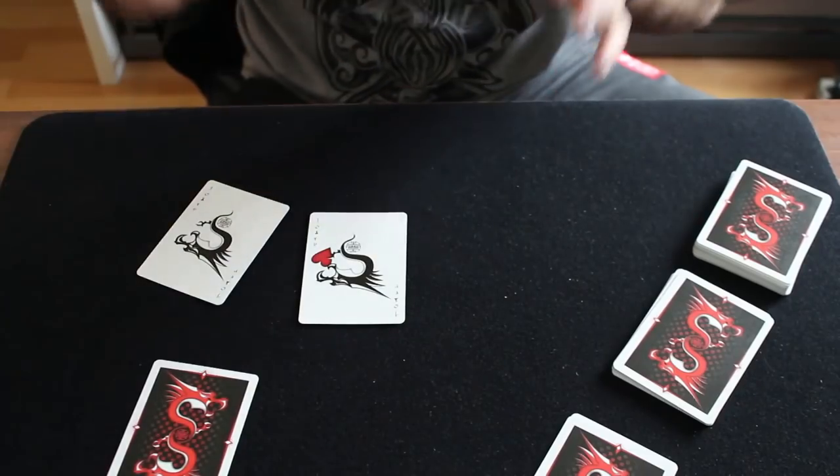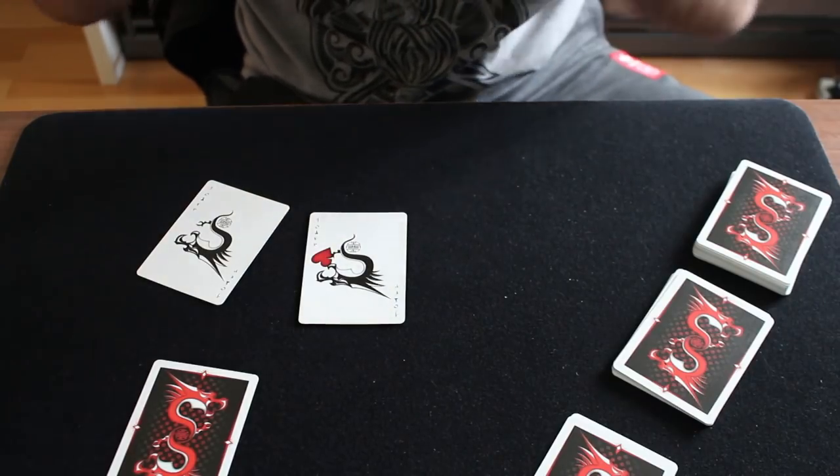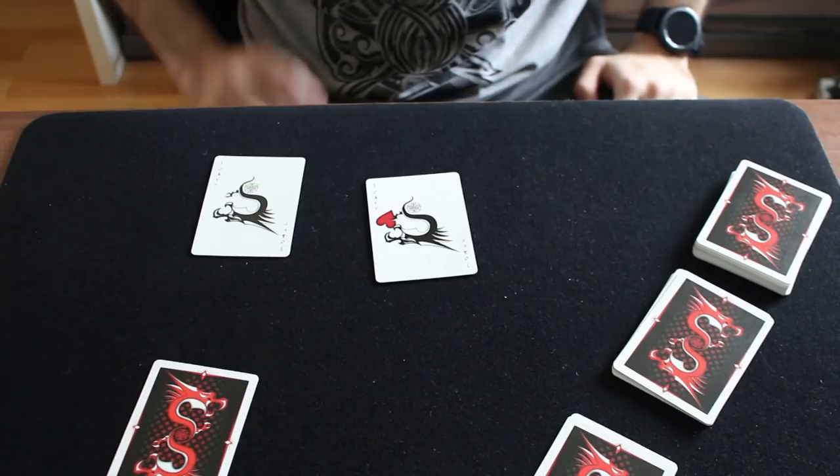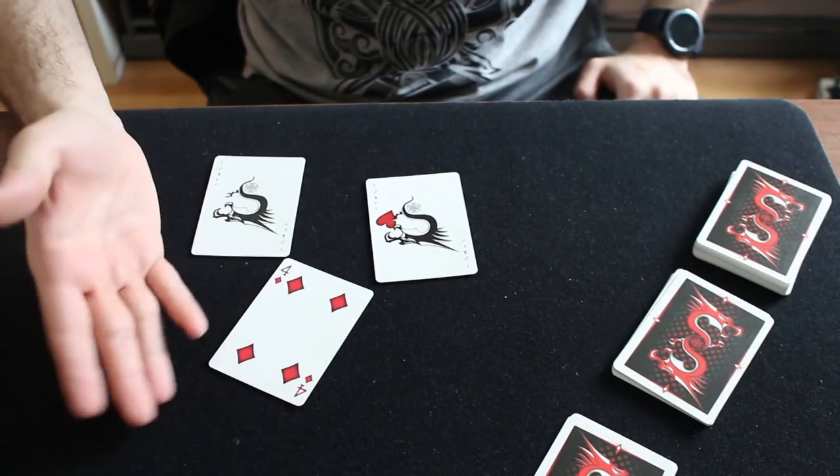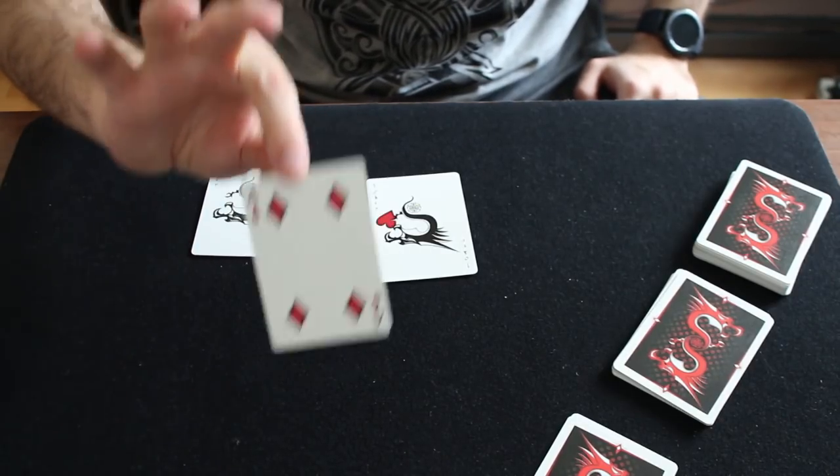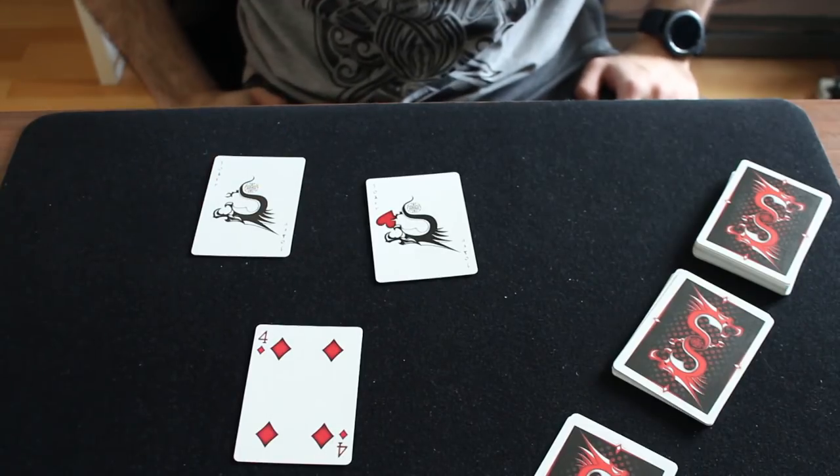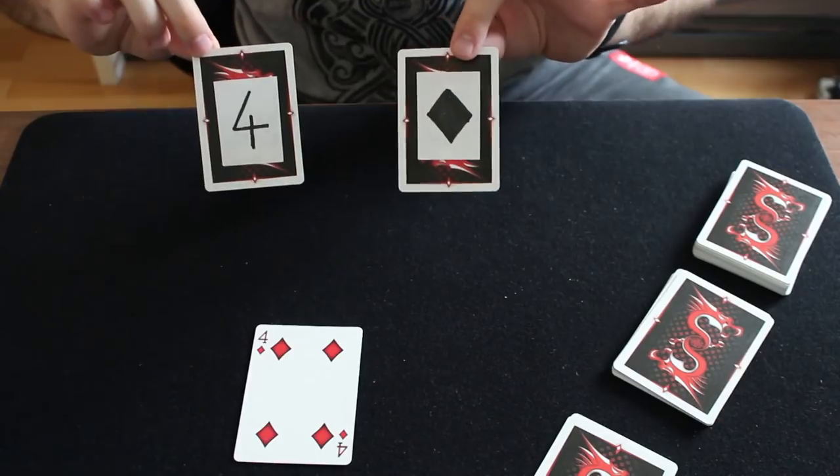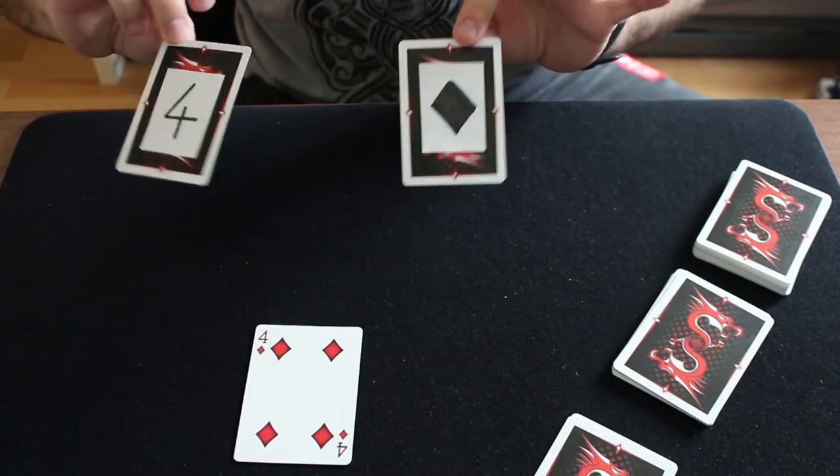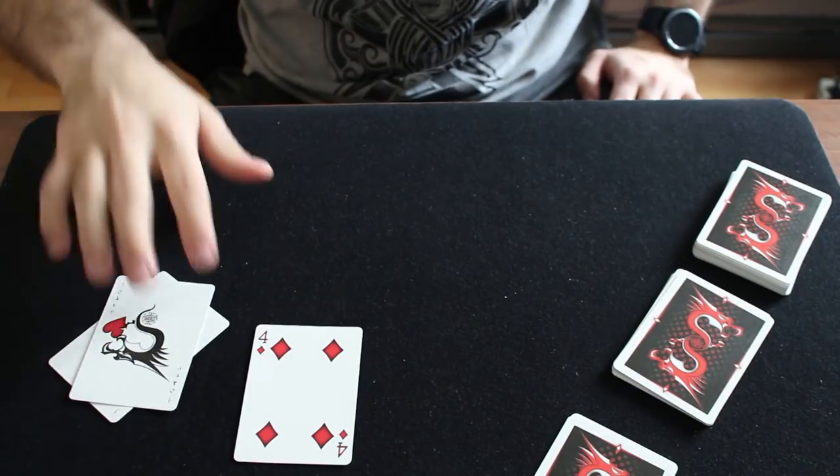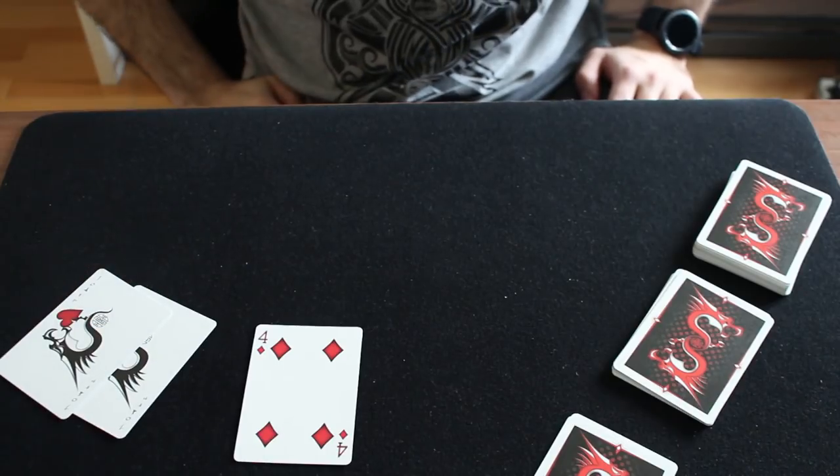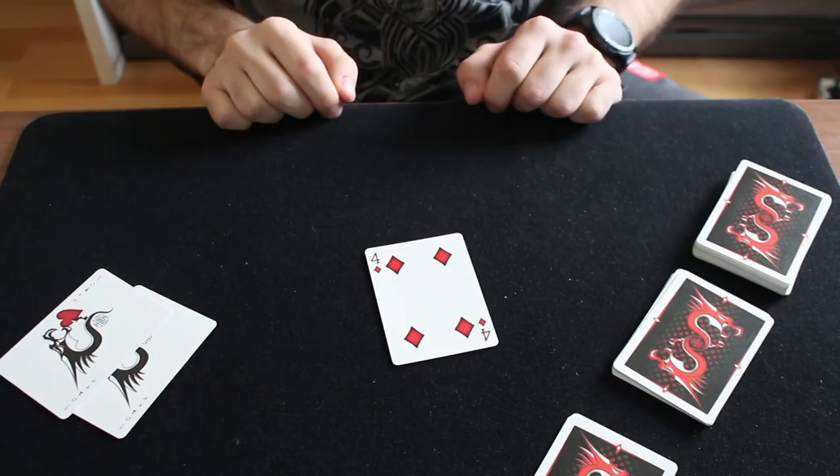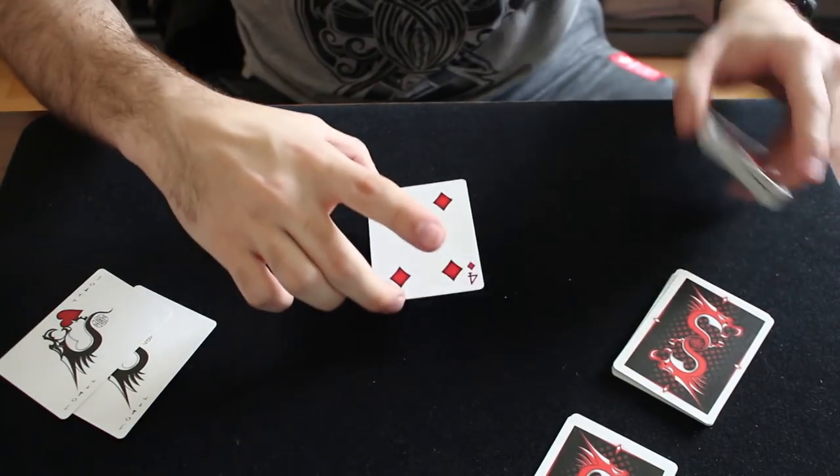So guys, here is now the explanation for this killer card trick. For this one you will need the 2 jokers. You will choose a card that is gonna be the card at the end that you end up with. In this case I use the 4 of diamonds. And you will just make a prediction on the back of the jokers. The 4 of diamonds. Now the jokers start on the table since the beginning facing up.